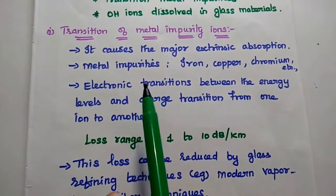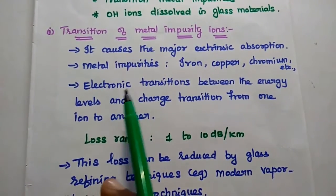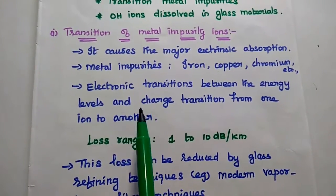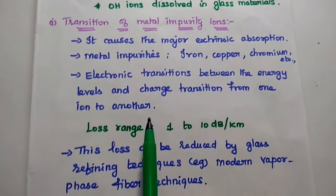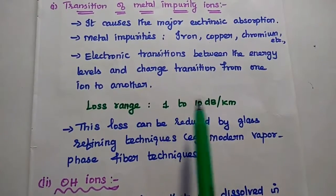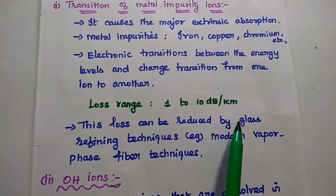The transition happens in two places. One is electronic transition between the energy levels. The next one is charge transition from one ion to another ion. The loss range is from 1 to 10 dB per kilometer.